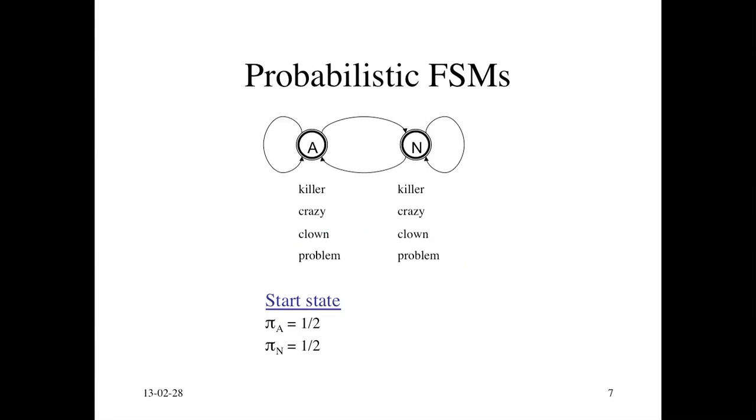The thing that was missing from the previous slide was the start state probability. How likely are you to start at a certain state? Well, this particular probability distribution says it's equally likely. You can start at A or N. It's probability 0.5 either way.